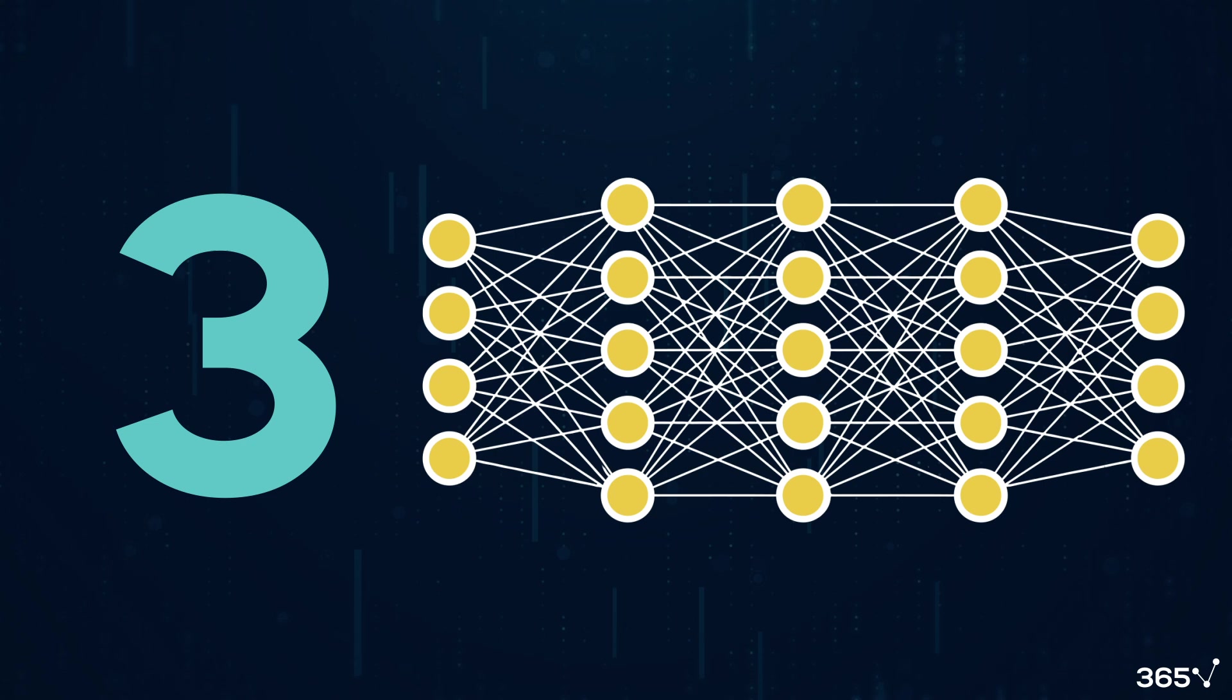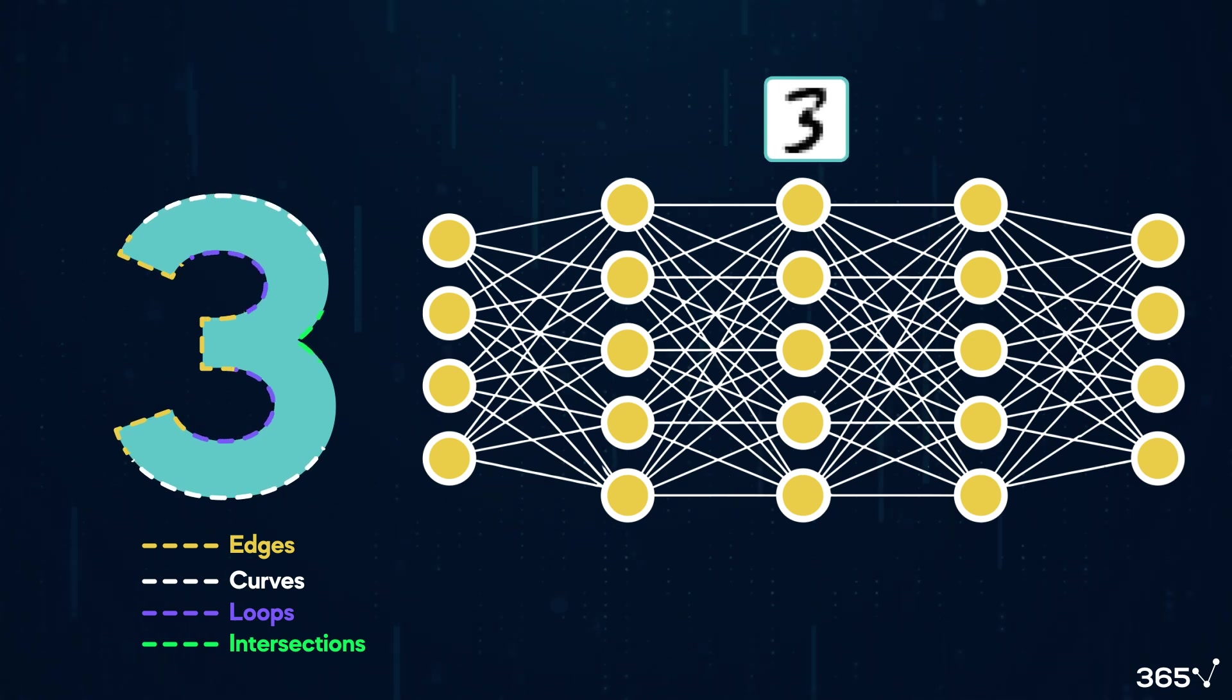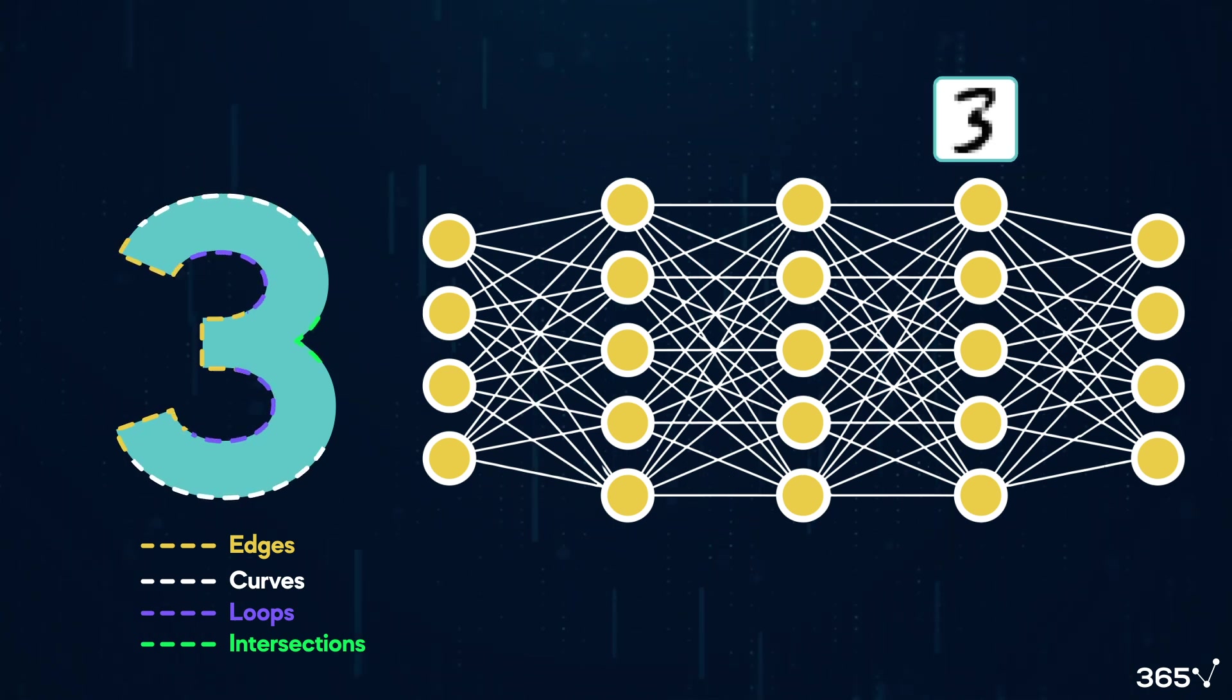We've identified edges and curves, and now we can use them to discern more complex shapes, like loops and intersections, bringing us closer to recognizing numerals. When the information reaches the third layer, the neural network has learned to recognize the overall shape and configuration representing the number 3.